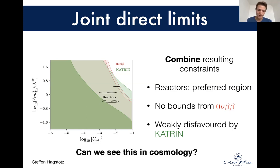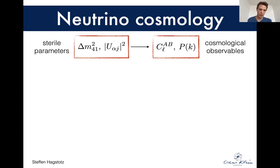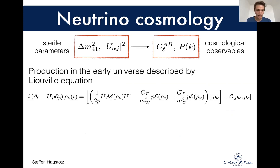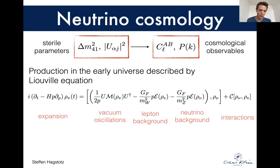So then we have to look for other ways, and one very appealing way is to look at cosmology. The big challenge is to essentially translate the sterile neutrino parameters — the mass splitting between the new state and the other states and the mixing matrix — into cosmological observables, such as CMB power spectra or the matter power spectrum that we can see at late times. To do this, you have to solve for the production of the sterile neutrino in the early universe by solving this Liouville equation that I sketched here. It looks a bit scary because it is. This is very, very difficult: you have to account for the expanding background, vacuum oscillation terms, interactions with the electron background, with the neutrino background, and in addition scatterings and weak interactions in the early universe. All of those terms are important at different times, so you can't neglect them.